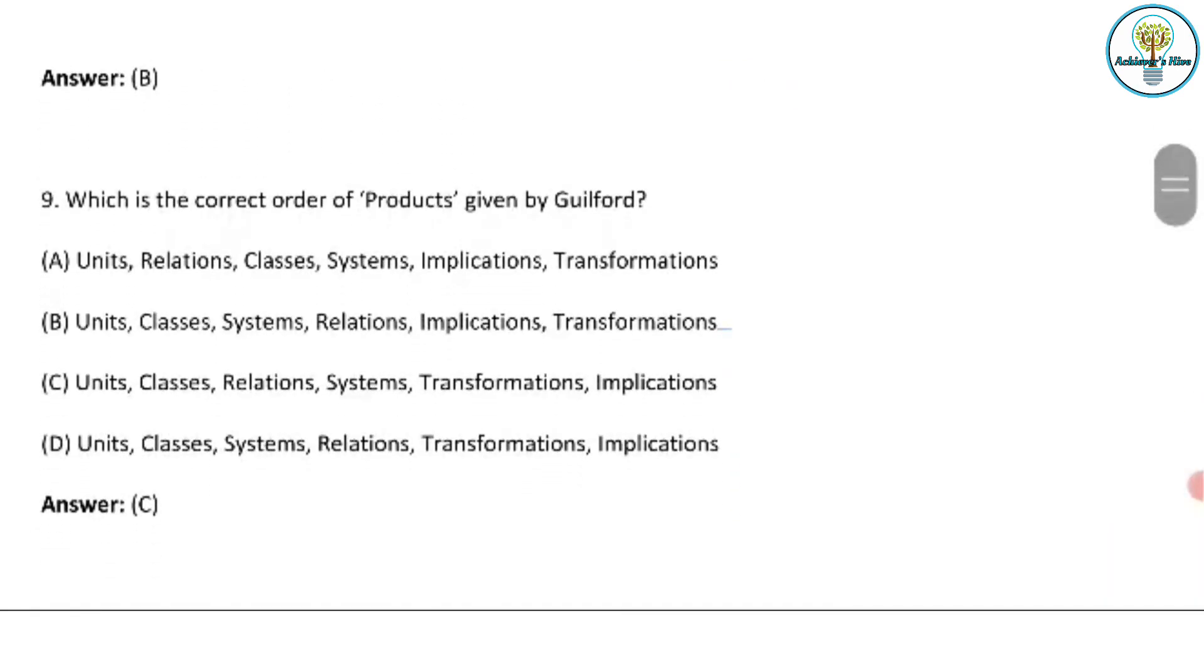Which is the correct order of products given by Guilford? When you study Guilford theory you get to know that unit, class, relation, system, transformation, implication - this is the correct which is option C. This is the correct answer for the products given in the Guilford theory. Guilford theory was given by J.P. Guilford, Joy Paul Guilford. And in his theory he explained intelligence in terms of the cubic structure and one side of the cube which is known as products.